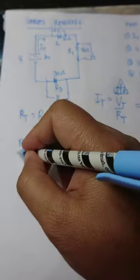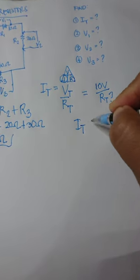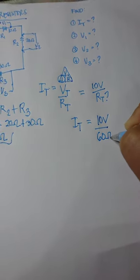Now that we know the total resistance, we can now solve the total current. So let's just substitute 60 ohms.